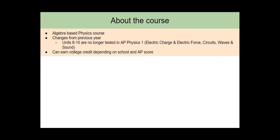There is going to be a little bit different from what you may know about the course, because they got rid of units 8 through 10 — the basic electricity, circuits, waves, and sound — which is actually good for us because that means we can really focus on units 1 through 7, and it gives a little more time to do more of the labs that we always wanted to do in the past but were never able to fit in with all 10 units. You can earn college credit depending on what school you are applying to and your AP score, so there is a benefit to taking that AP test and doing well. You can go into college with some credits under your belt, so you don't have to take as many classes or you can get out of some gen ed science classes.